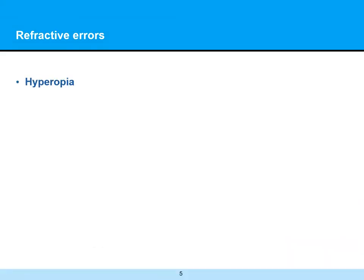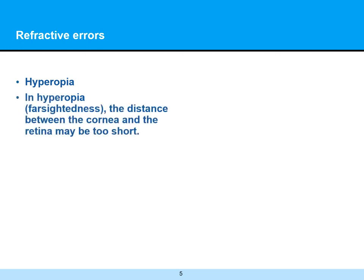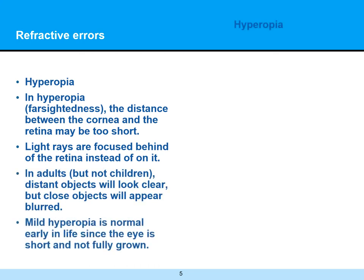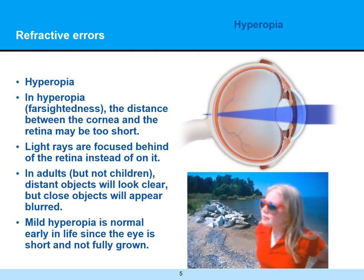Hyperopia is really the state of the eye when you're first born — that's farsightedness. In this case, the distance between the cornea and the retina may be too short, so light rays are focused behind the retina instead of on it. In adults but not children, distance objects will look clear but close objects will appear blurred. Mild hyperopia is normal early in life since the eye is small and not fully grown. Because children have very flexible lenses, hyperopia in children is absolutely normal.